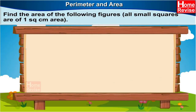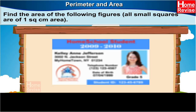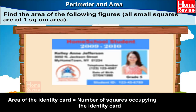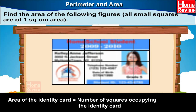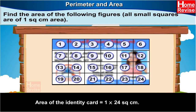Exercise: Find the area of the following figures. All small squares are of 1 square centimeter area. First, let us see this identity card. The area of the identity card is equal to the number of squares occupying the identity card. Let us count the squares. There are 24 squares and each square has an area of 1 square centimeter. Therefore, the area of the identity card is 1 into 24 square centimeters, which is equal to 24 square centimeters.